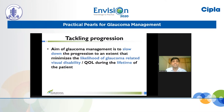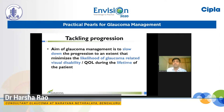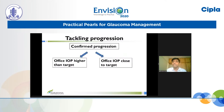Before discussing tackling progression, we need to remind ourselves that the aim of glaucoma management is to slow down progression to an extent that minimizes the likelihood of glaucoma-related visual disability during the patient's lifetime. This means it is perfectly fine not to change treatment even in the presence of confirmed progression if that amount of progression is unlikely to affect visual quality of life or cause visual disability during the patient's lifetime.